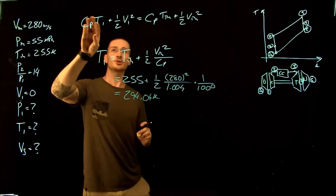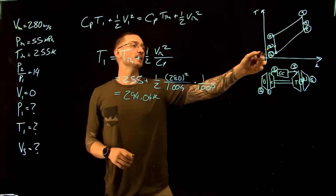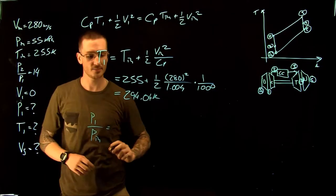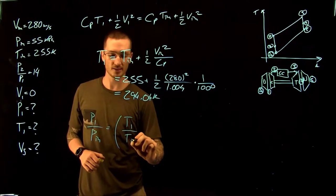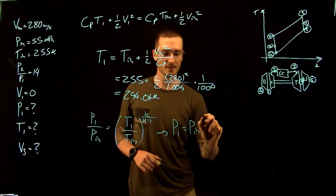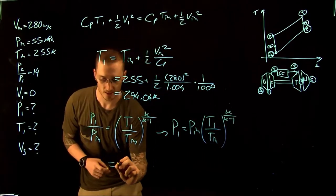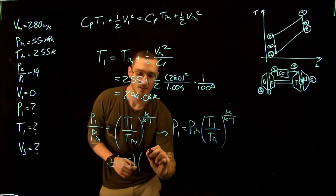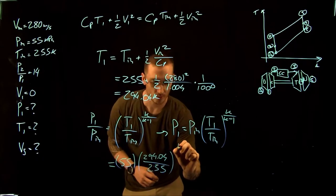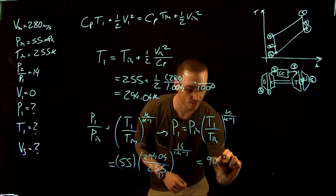This energy equation says the energy from temperature plus kinetic energy is conserved through the diffuser. Since the process from inlet to point 1 is isentropic, we use the isentropic relation: P1/P_in = (T1/T_in)^(K/(K−1)). Rearranging: P1 = P_in × (T1/T_in)^(K/(K−1)). Substituting values: P1 = 55 × (294.04/255)^(1.4/0.4), giving a pressure at the compressor inlet of 90.56 kPa.